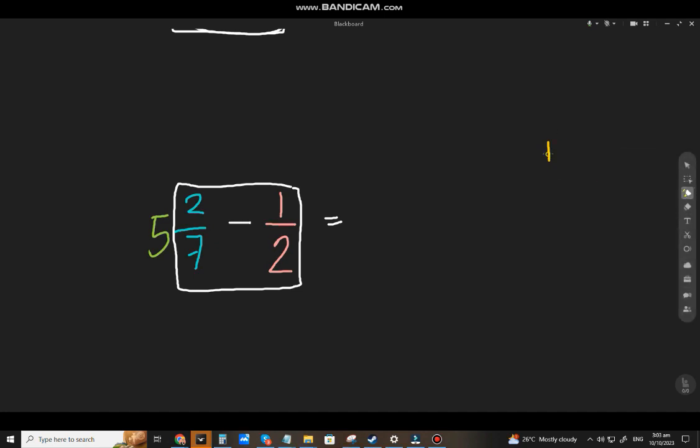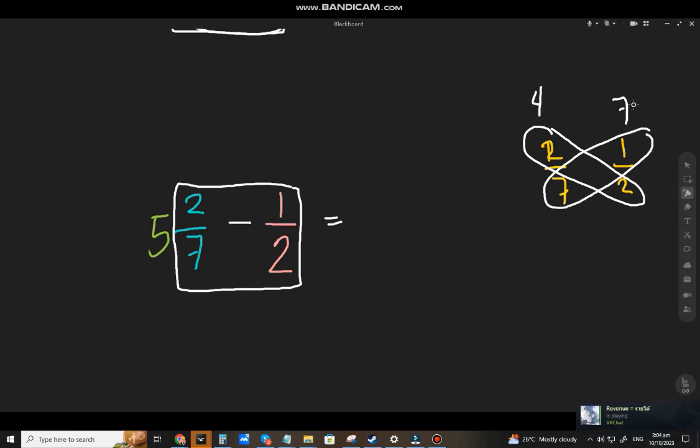Let's check. 1, sorry. 2 sevenths muna. 2 sevenths at 1 half. So, cross multiply. 4 ito. Ito naman ay 7. Mataas ang 1 half, diba? So, we have to do borrowing.